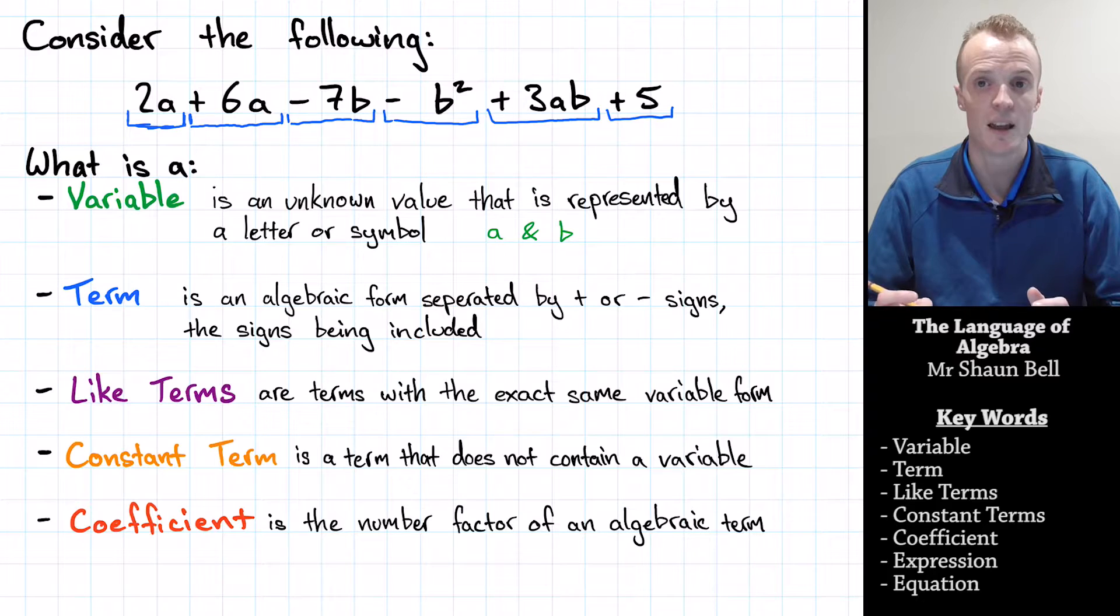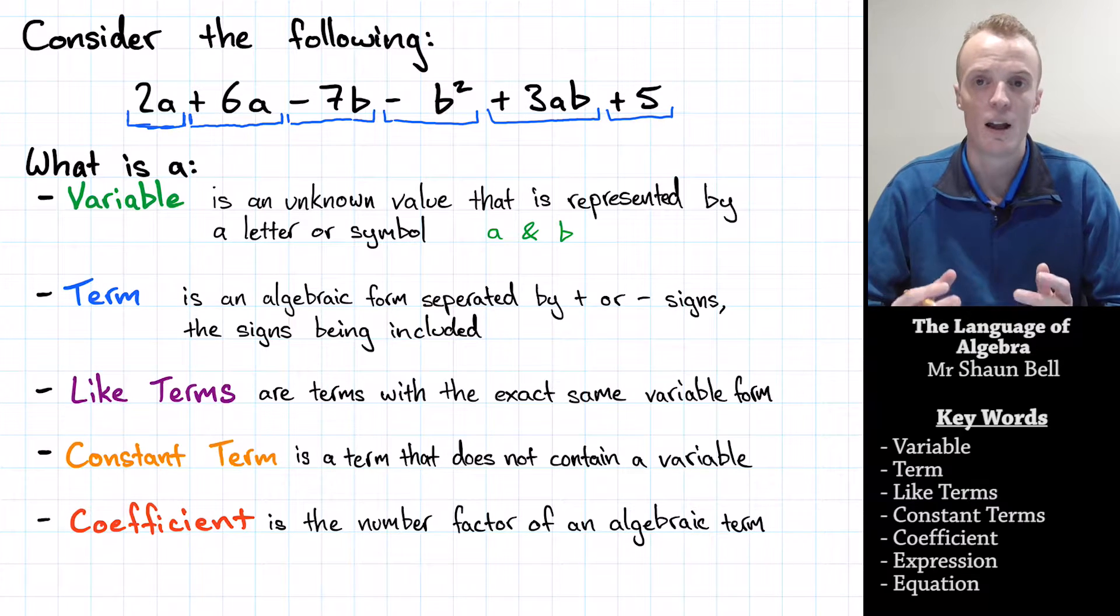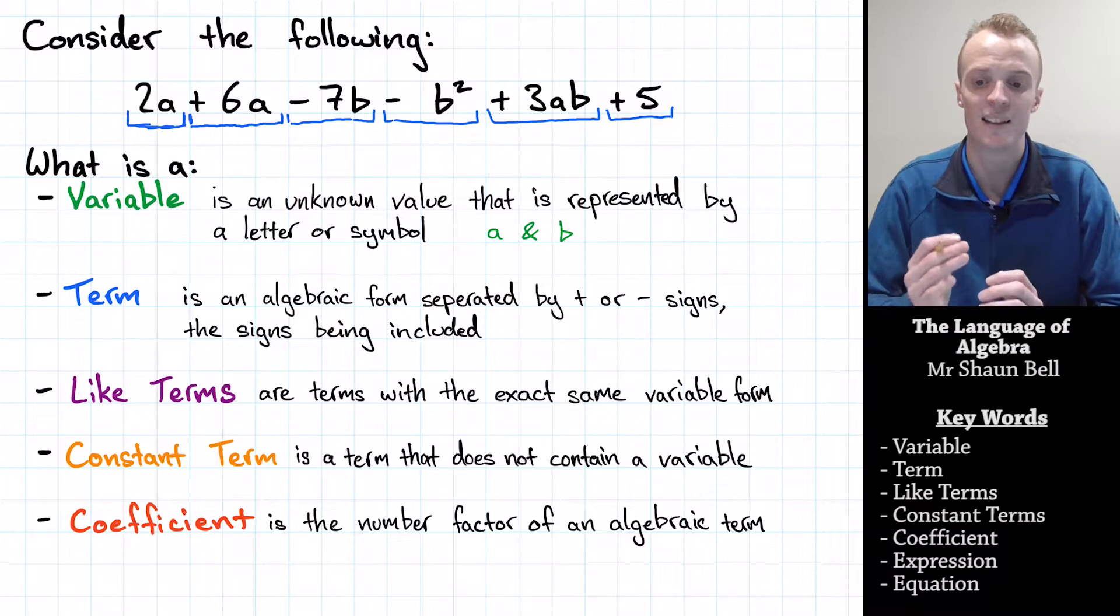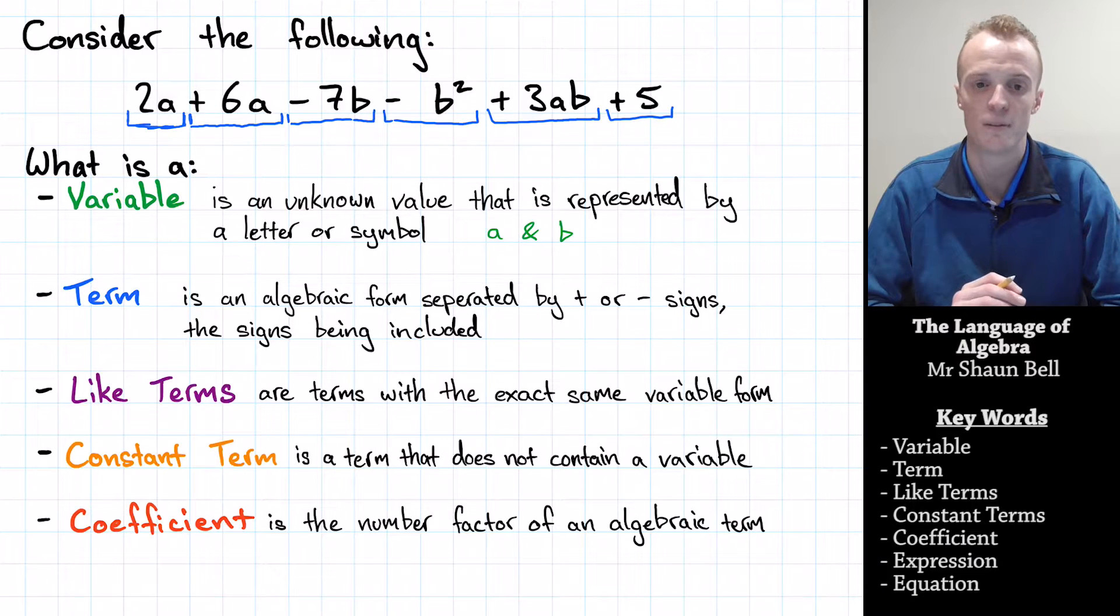And then the third term starts just before that subtraction sign, and we continue on for the rest of this statement. So as you can see, we've got 6 total terms in this algebraic statement. So now we have an understanding of what a single term is. What are like terms? Now, like terms are 2 or more different terms that have the exact same variable form.